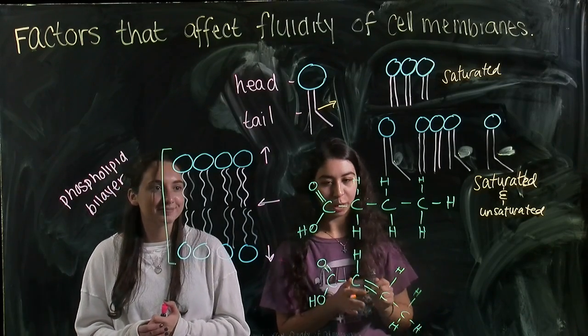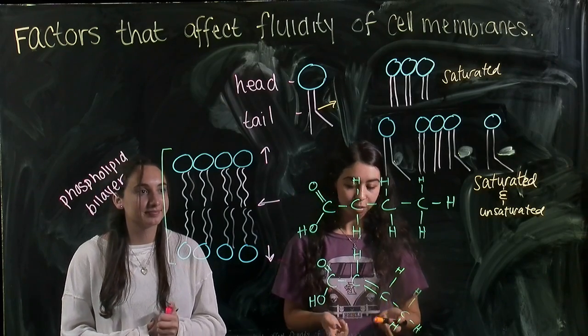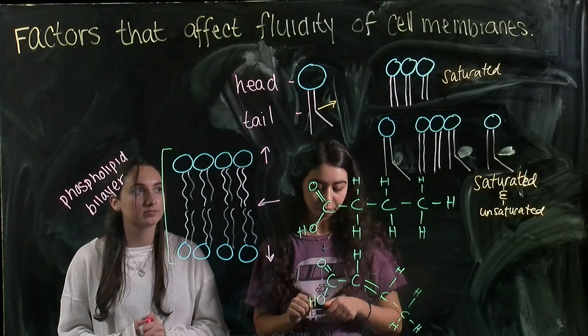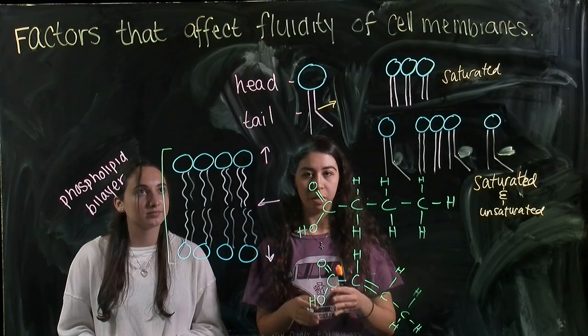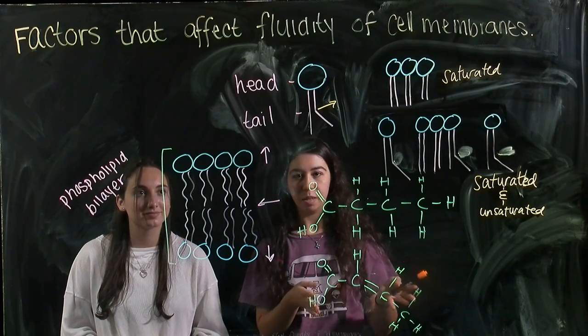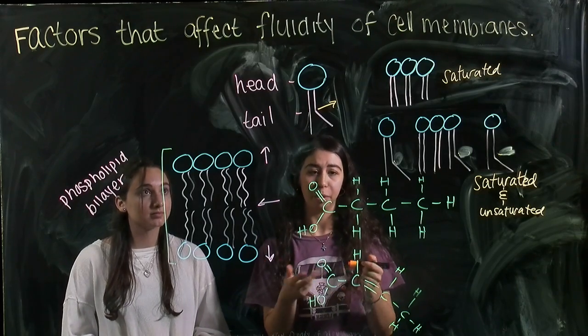So the first property we're going to talk about is the saturation of the lipids hydrophobic tails, which are essentially hydrocarbon chains. Saturation is dependent on the number of double bonds in a hydrocarbon chain. If there are double bonds, then the molecule is said to not have the maximum number of hydrogens that it possibly can.